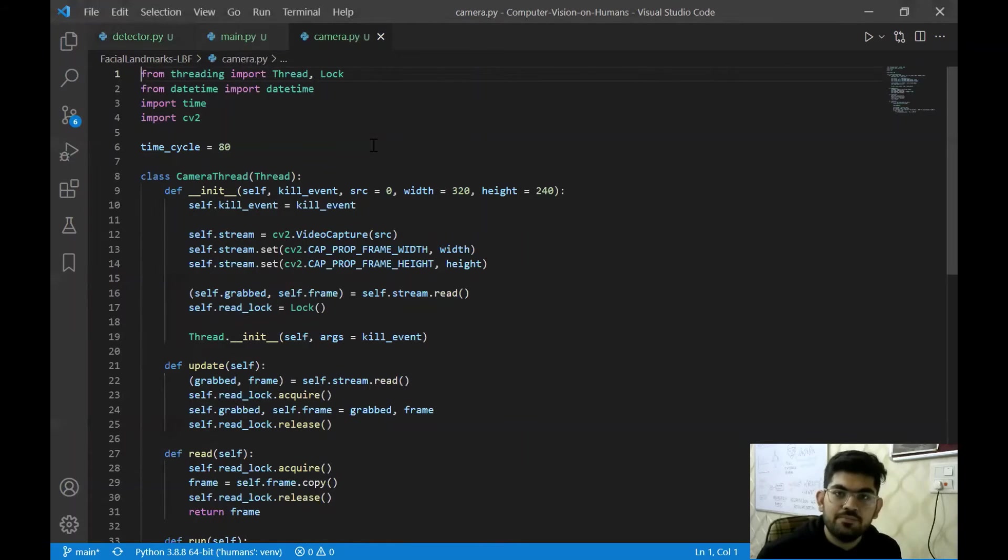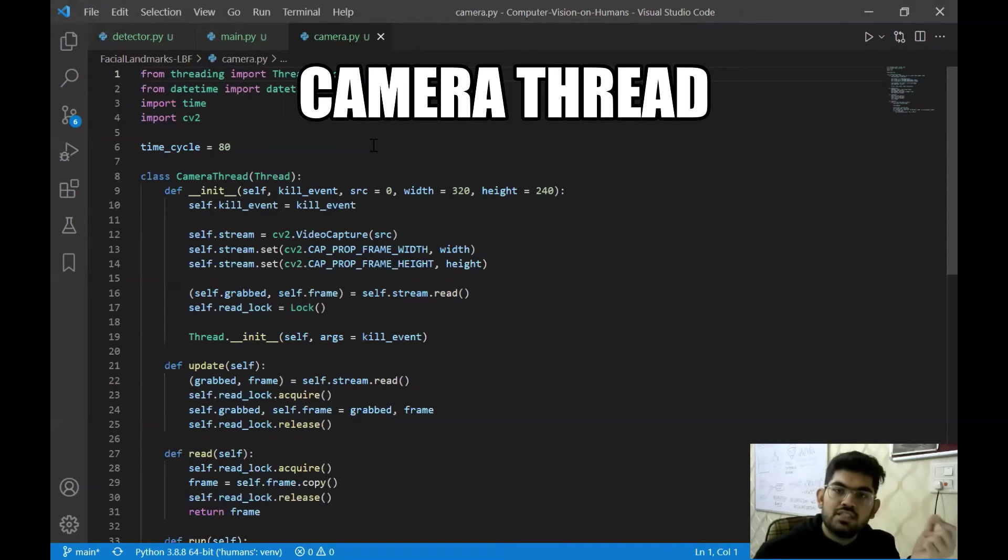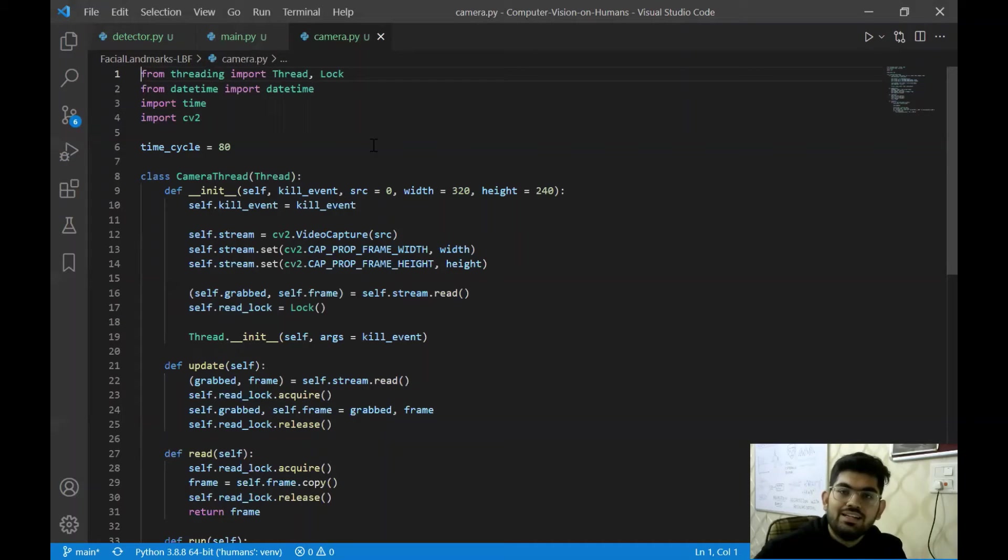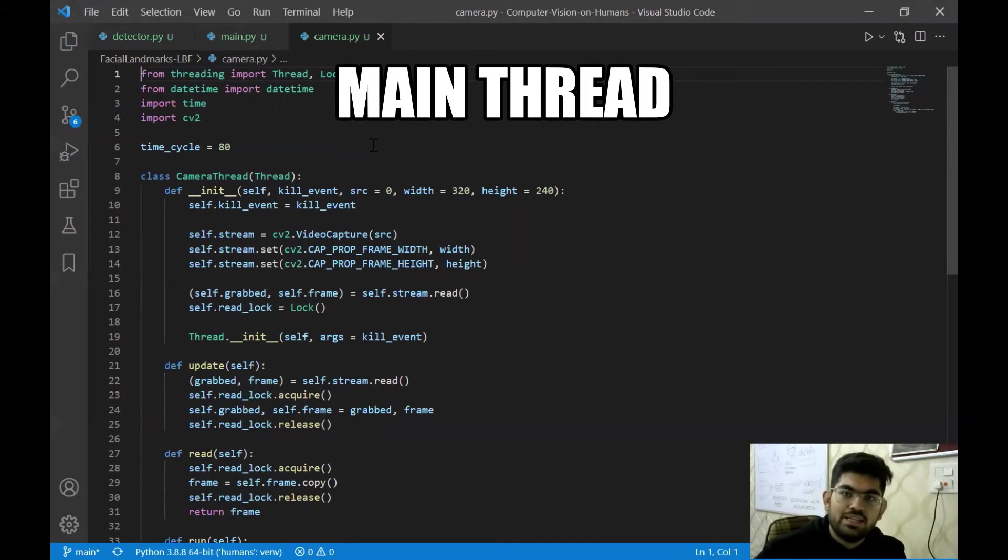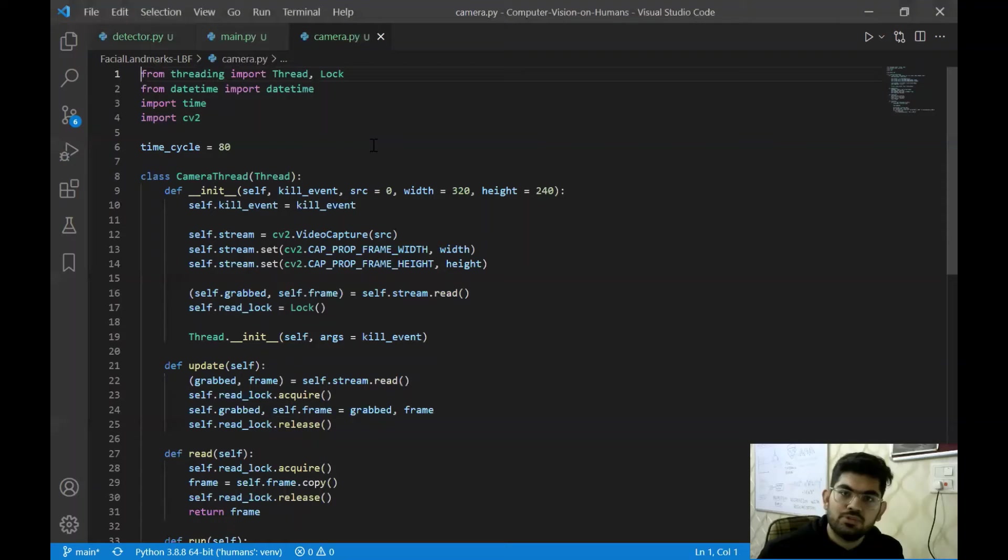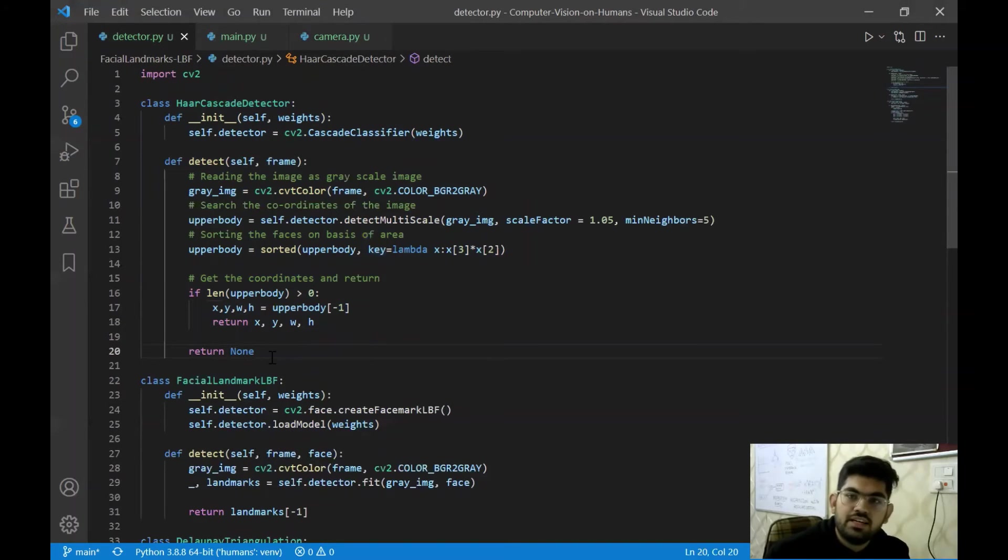Similar to the architecture we had in our previous video, HAAR cascade detection, we have two threads of program running in the application. The first thread is the camera thread which captures images from the webcam. And the second thread is the main.py thread that does the actual processing of that image. Here we are reusing the code from our previous video, the HAAR cascade detection. You can have a look at the video from the i button above.